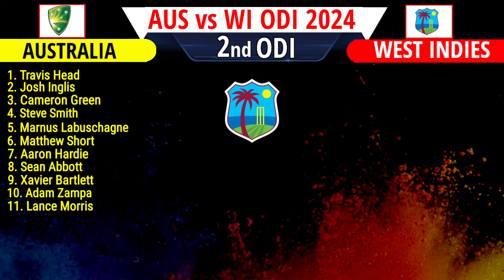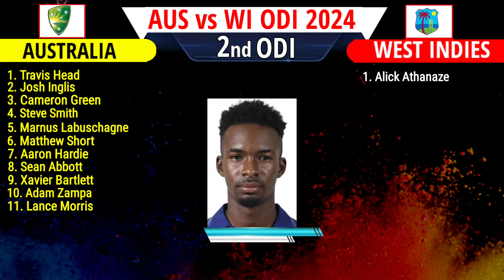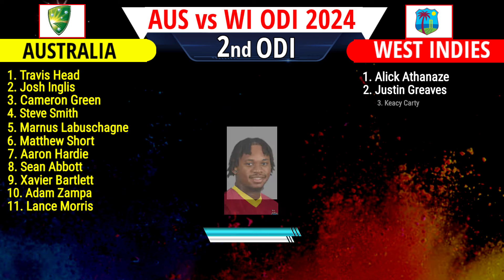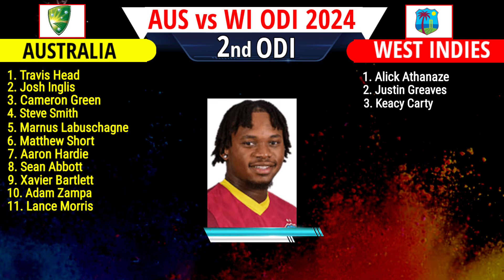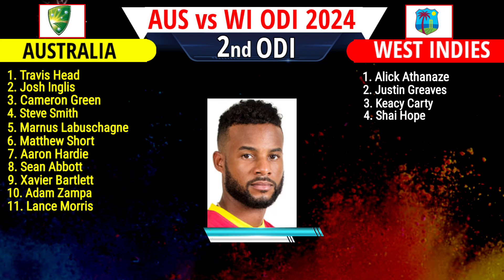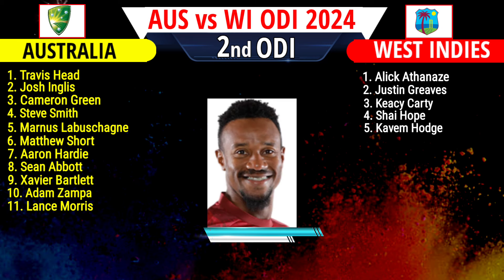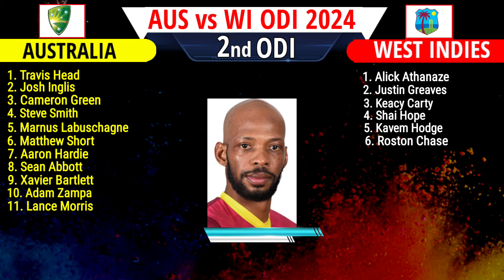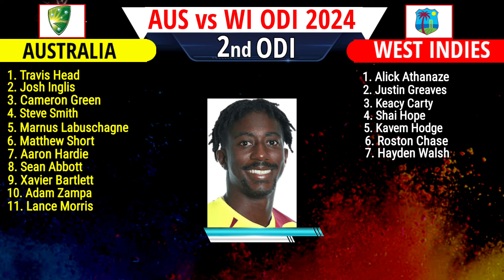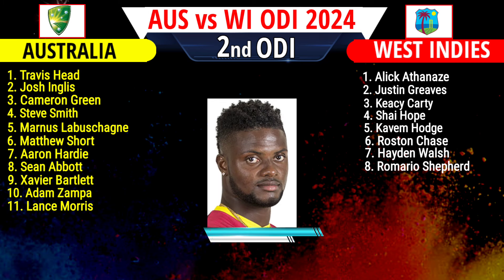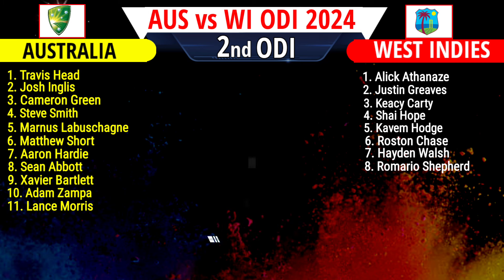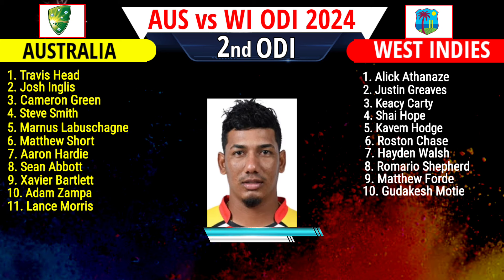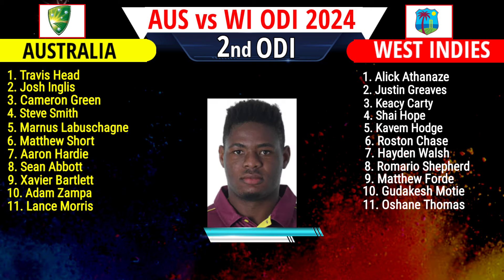West Indies playing 11 — number one Alick Athanaze, number two Justin Greaves, number three KC Carty, number four Shai Hope, number five Keacy Carty, number six Roston Chase, number seven Hayden Walsh, number eight Romario Shepherd, number nine Matthew Forde, number ten Gudakesh Motie, number eleven Oshane Thomas.